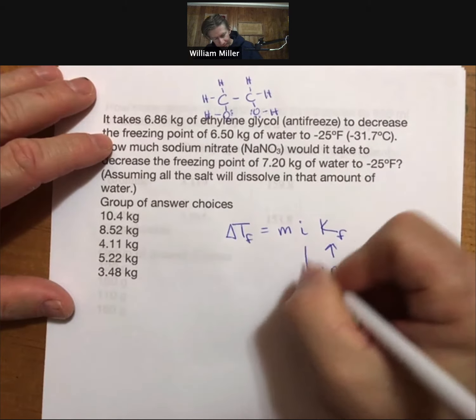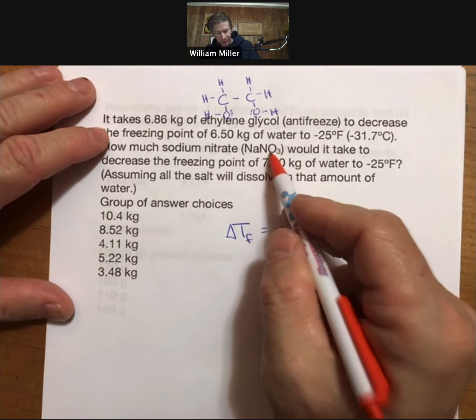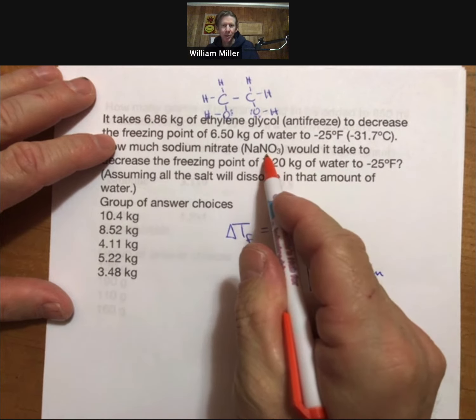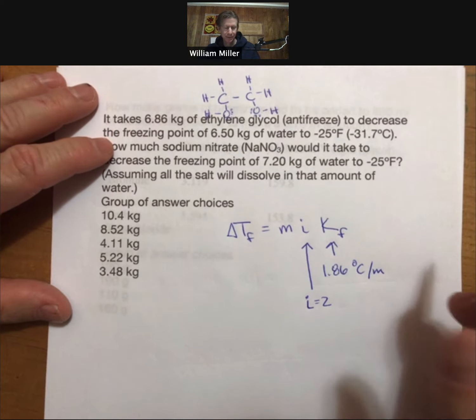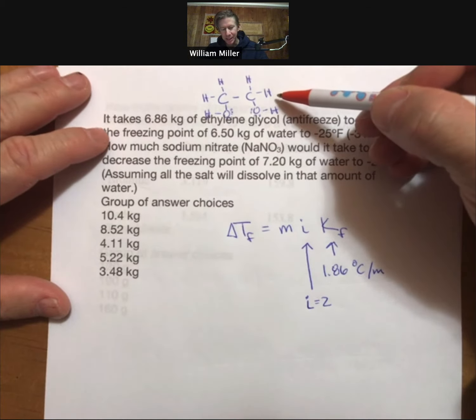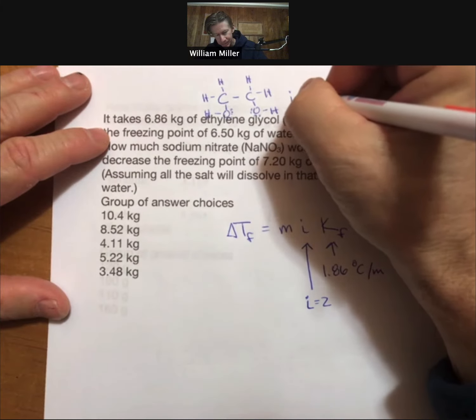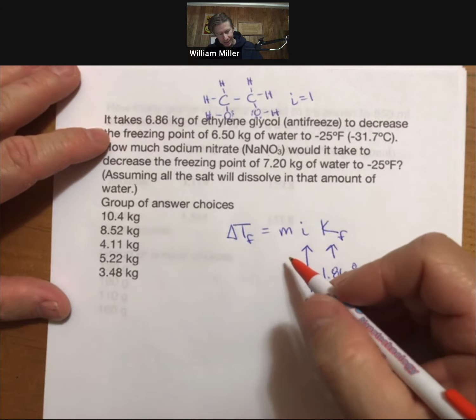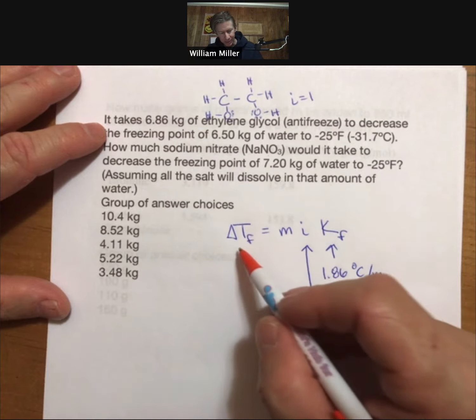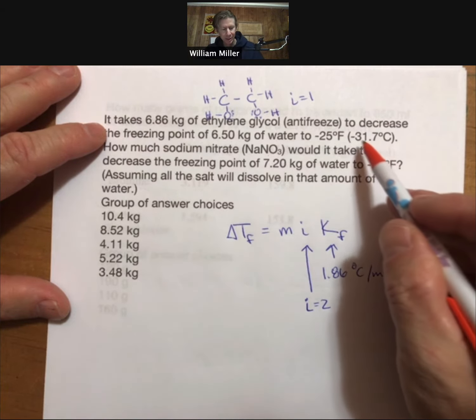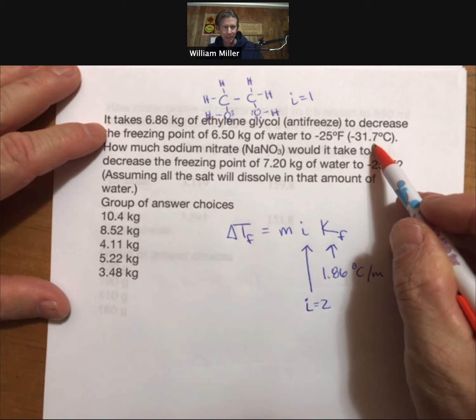For sodium nitrate, we know that i equals two because it breaks up into two ions as an ionic compound. Coincidentally, ethylene glycol is a non-electrolyte, so its i is one. We know that our delta T is going to be - well, it's in Fahrenheit here, but it tells us what our Celsius is.